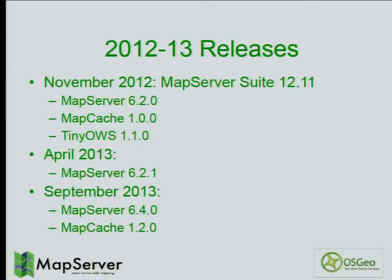In November 2012, we released what we call the MapServer suite, which included MapServer — the one you've known for several years — MapCache, the tile caching environment, and TinyOWS, the transactional WFS server. We released all of them at the same time, as they all joined the project in 2012. That was MapServer 6.2. A couple of days ago we released MapServer 6.4 along with MapCache 1.2. There's no release of TinyOWS as there hasn't been major development, so 1.1 is still the current version.